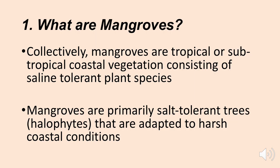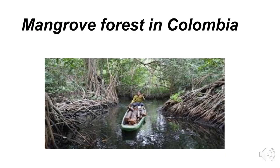Collectively, mangroves are tropical or sub-tropical coastal vegetation consisting of species that are tolerant to salts — saline-tolerant plant species. They're basically salt-tolerant trees, called heliophytes, that are adapted to the harsh coastal conditions where you often have a mix of fresh water and salt water. Not many things grow in salt water, but mangrove species are well adapted. So along the coastline in many tropical and subtropical areas of the world, you do have mangrove forests.